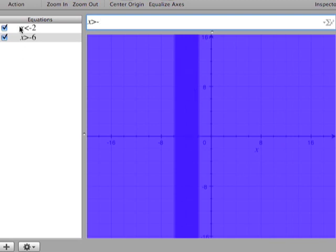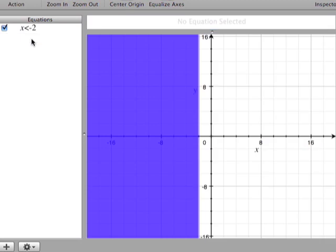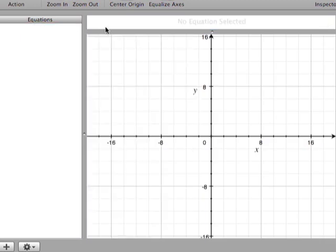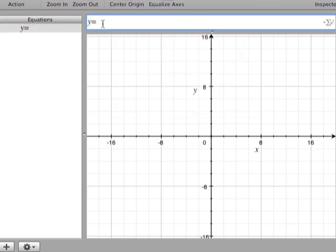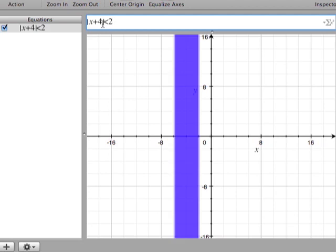Luckily for us, this program actually will graph the absolute value equation itself. So I think we had the absolute value of x plus 4 is less than 2. And there it is.